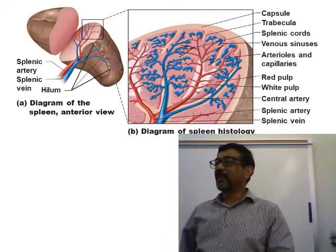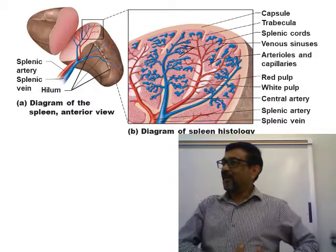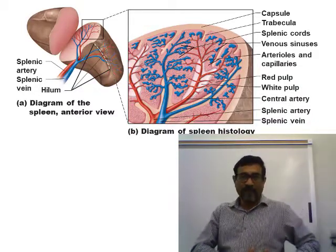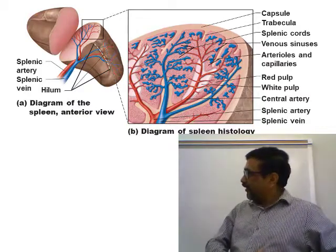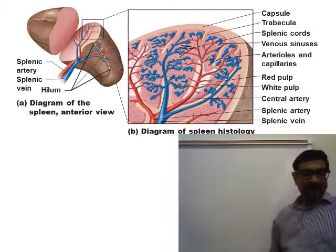Splenectomy — surgical removal of the spleen — may be performed when an enlarged spleen causes pain and complications. Although the spleen is responsible for immunity, you have many other lymphoid organs like lymph nodes, tonsils, thymus, appendix, and bone marrow, so removal of one or two organs does not cause a big problem.